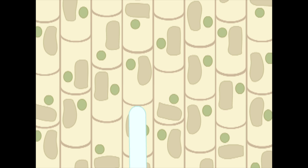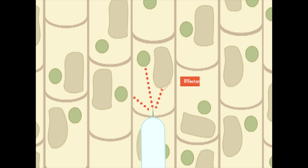The nematode then selects a single cell to turn into its feeding site. It uses its stylet to puncture the cell wall and injects what are called effector proteins. These effector proteins trigger developmental and metabolic changes within the targeted cell.